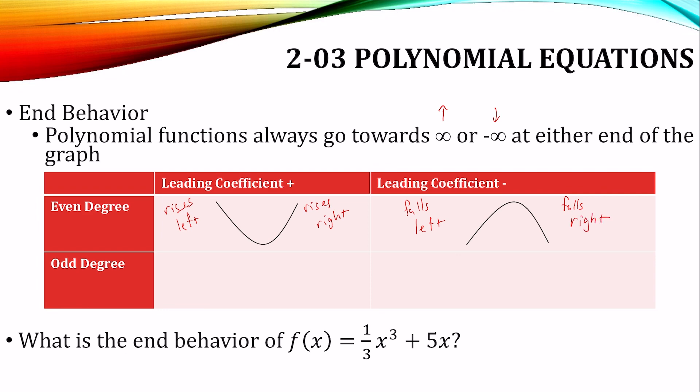But if it's an odd degree, one end goes each direction. If it's an odd degree with a positive leading coefficient, it falls left and it rises to the right.